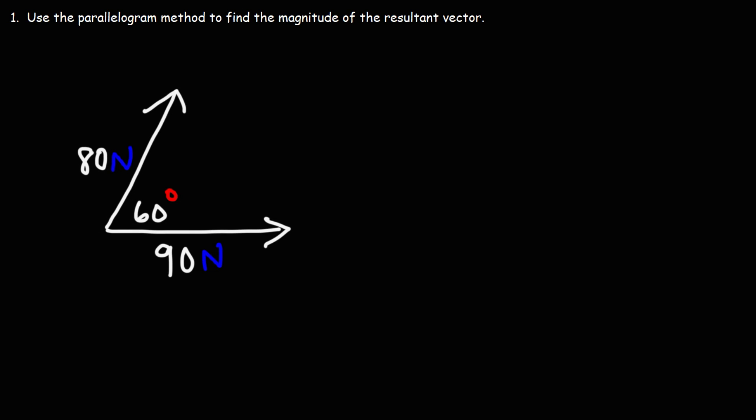In this lesson we're going to talk about how to use the parallelogram method to find the magnitude of the resultant vector. So the resultant vector of these two vectors, since these are forces, F1 and F2, it's going to be somewhere in the middle.